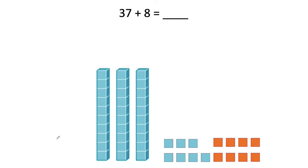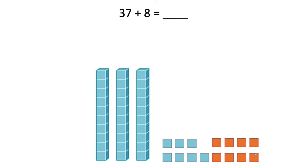So now I used my blocks to show 37 and eight more. Whenever I add, I add my ones with my ones and my tens with my tens. I'm going to start in the smallest place, which is the ones. So I'm going to count up my ones — one, two, three, four, five, six, seven, eight, nine, ten, eleven, twelve, thirteen, fourteen, fifteen. So I have 15 ones.